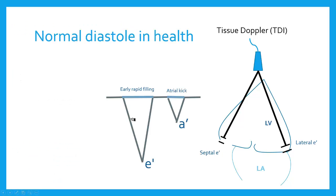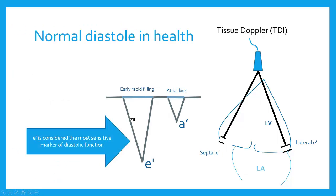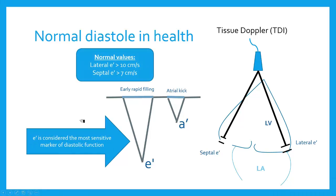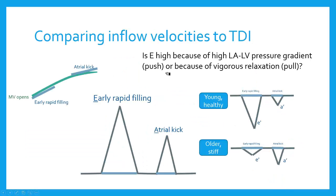E prime is considered the most sensitive marker of diastolic dysfunction — the best marker for myocardial relaxation. Here are some normal values. The one I use most is the lateral E prime; it's easy to remember: 10 centimeters per second. A normal lateral E prime should be greater than 10 cm/s. The actual number will be negative on the display, but the velocity is reported as a positive absolute value. Now let's put these two pieces together — you'll be doing pulse wave Doppler for inflow velocities and myocardial tissue Doppler.